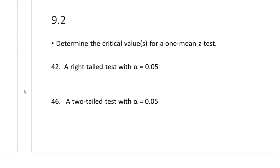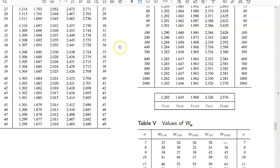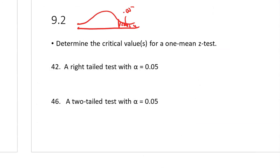For a one-mean Z-test, right-tailed, with alpha equals 0.05: I'm looking for an area of 0.05 on the right tail. Going to the table and looking for 0.05 gives a critical value of 1.645. Anything to the right of 1.645, reject the null hypothesis; to the left, do not reject.